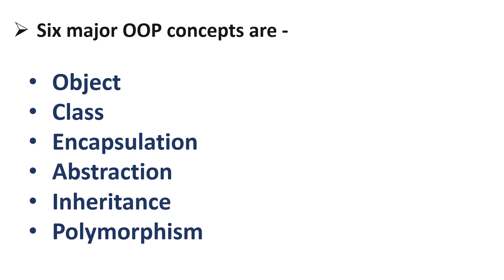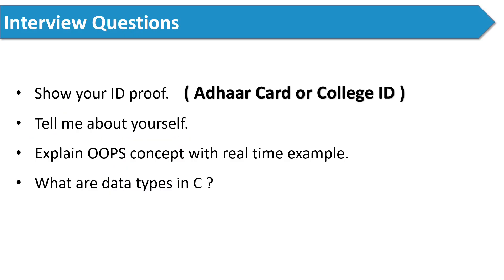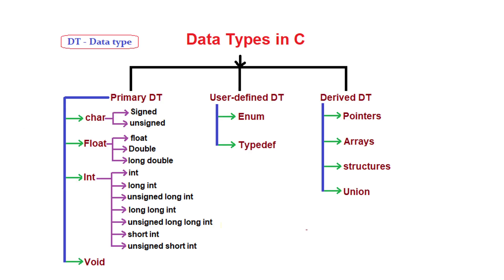The next question is: what are the data types in C? You can tell the names of the data types — like int, char, float, long, and so on.